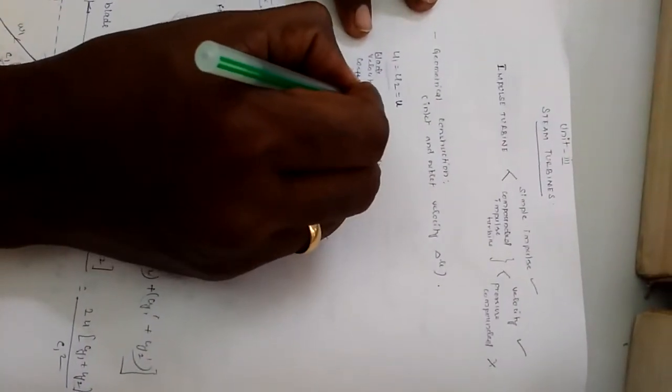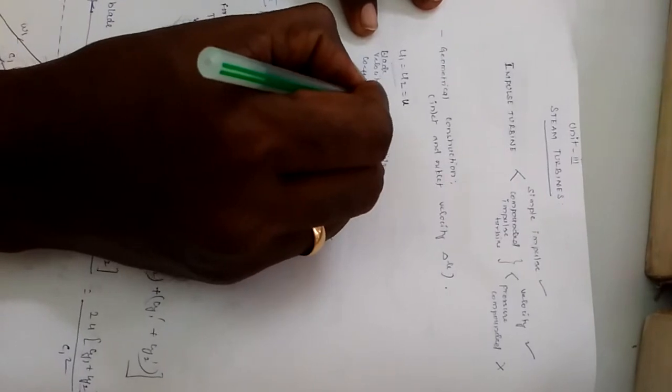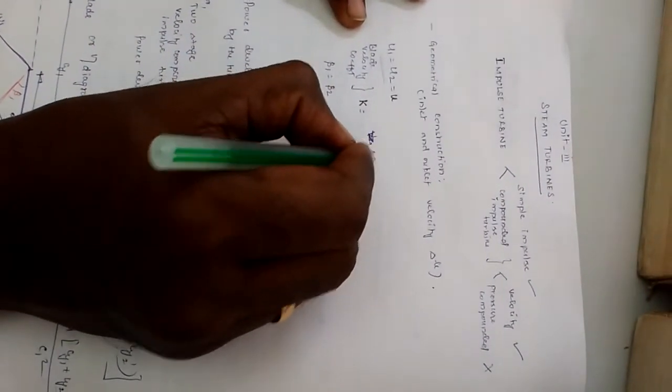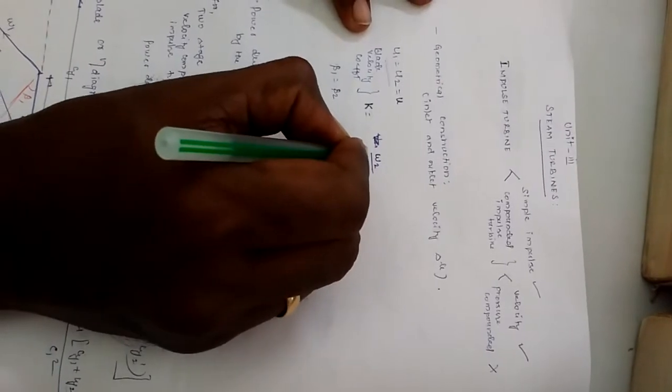And we have one more parameter called blade velocity coefficient. This represents the ratio between the outlet relative velocity to the inlet relative velocity.